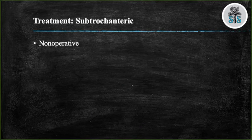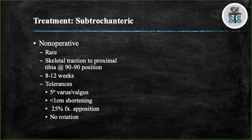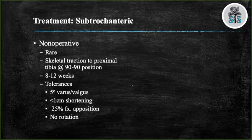There are three main treatment options for subtrochanteric fractures: nonoperative treatment, 95-degree plates, and long intramedullary nails. Nonoperative treatment is quite rare. If treating nonoperatively, you would have the patient lay in skeletal traction with their hip flexed at 90 degrees and knee flexed at 90 degrees for approximately 8 to 12 weeks, following healing with serial x-rays. Tolerances are 5 degrees of varus and valgus, less than 1 centimeter of shortening, 25 percent fracture apposition, and no rotation. Even in patients who do not ambulate, you should recommend operative fixation, as stabilizing these fractures can lead to improved pain control, improved mobilization, and improvement in the care caretakers can provide.